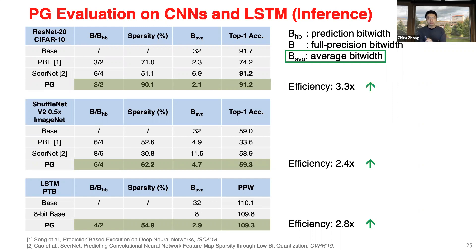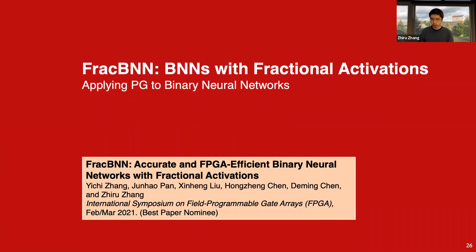At this point you may ask: how do we realize this dual-precision scheme in hardware? Is it cheap and doable? Can we apply this technique to the extreme case of one-bit networks — BNNs or Binarized Neural Networks? That's what I'll focus on for the rest of my talk. Let me introduce FRAC-BNN: a BNN with precision gating. This work was published at FPGA'21, led by student Yichi, joint work between my group and Professor Deming Chen's group at UIUC. This paper was one of three best paper nominees at the FPGA conference.